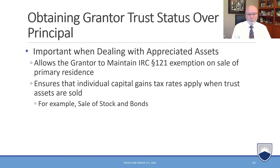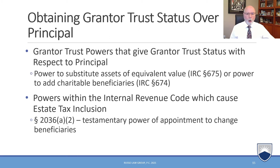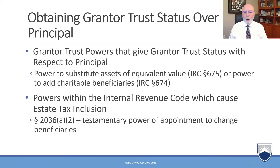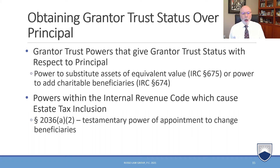This will ensure that individual capital gains tax rates apply when trust assets are sold, since trust capital gain tax rates kick in more quickly versus the individual reporting capital gains. To get grantor trust status with respect to principal, there are two powers that work really well: the power to substitute assets of equivalent value under code section 675, which makes it a grantor trust over the assets, or the power to add charitable beneficiaries under code section 674.